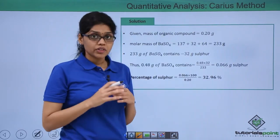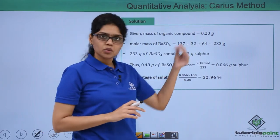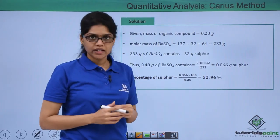Let's try to write these steps down. We know that the amount of organic compound that we had is 0.2 g and the amount of barium sulphate that is precipitated out is 0.48 g.